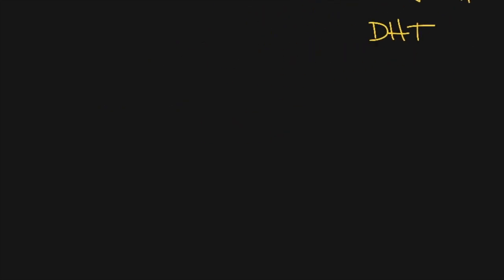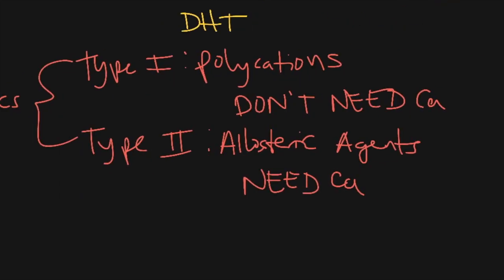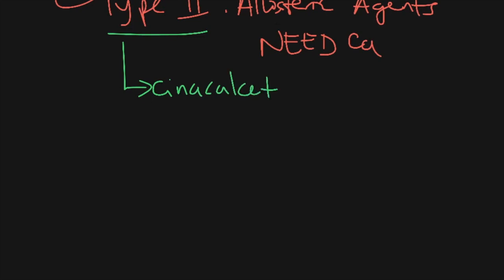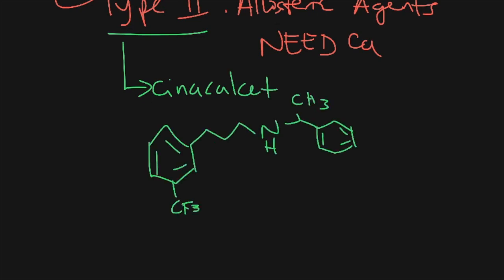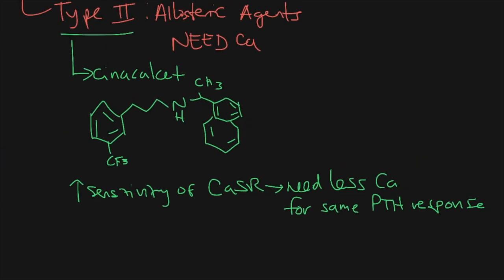The next category of calcium homeostasis drugs are calcimimetics. There are two types: type 1 are polycations which don't need calcium to work, and type 2 are allosteric agents that bind to a different site on the calcium sensing receptor and do need calcium to work. Dr. Jang gave one example: cinacalcet. Cinacalcet is a type 2 calcimimetic that increases the sensitivity of the calcium sensing receptor — meaning you need less calcium for the same PTH response. The way to remember cinacalcet's structure: it's the only molecule with a fluorine. When in doubt, fluorine it out.